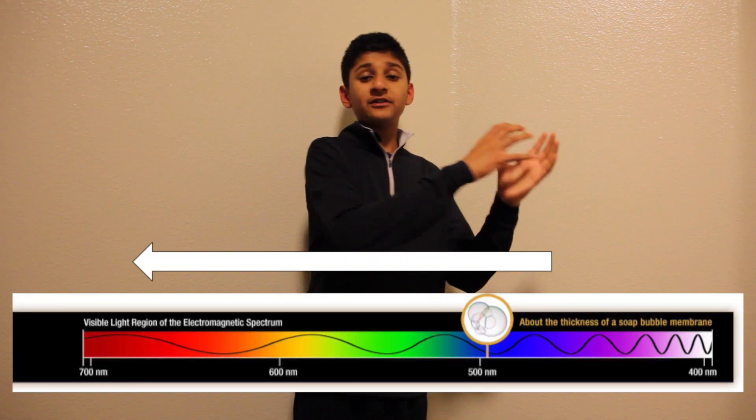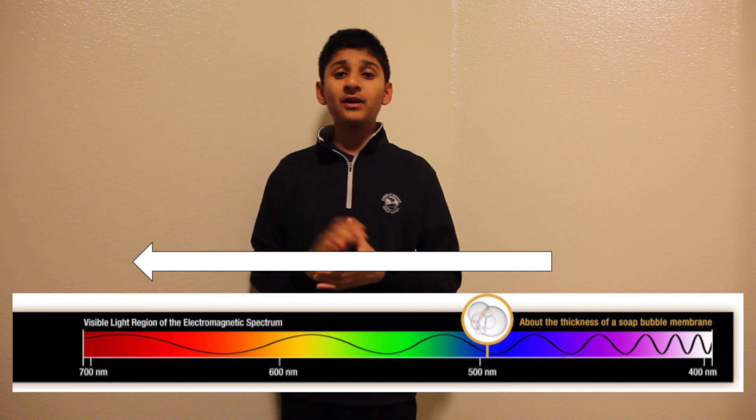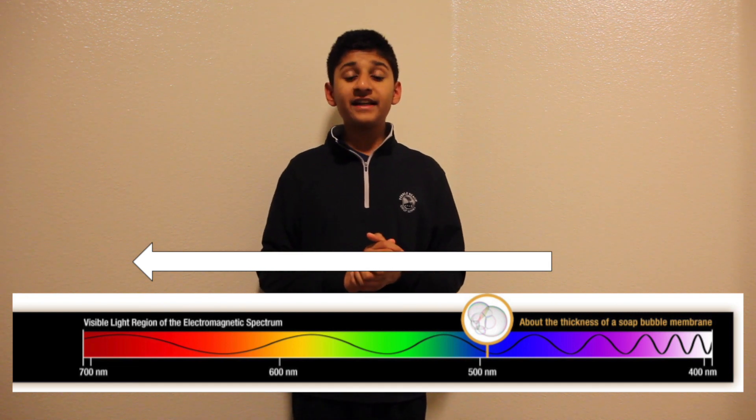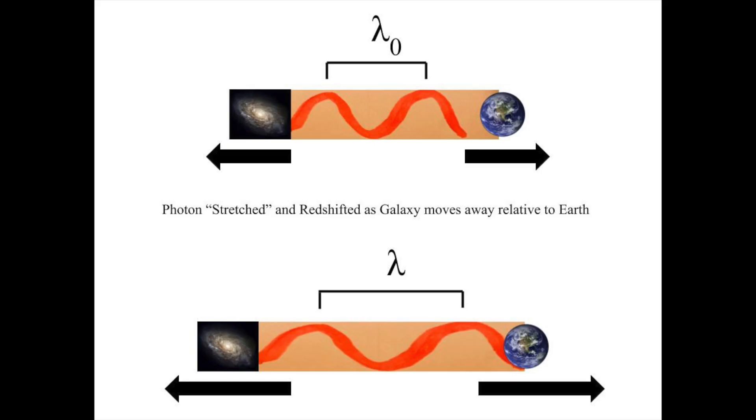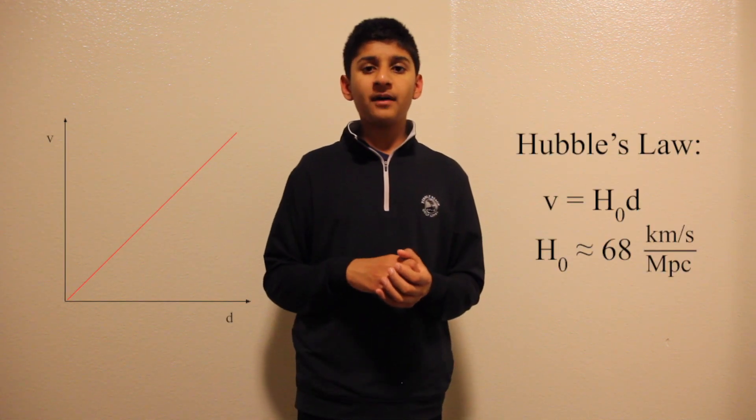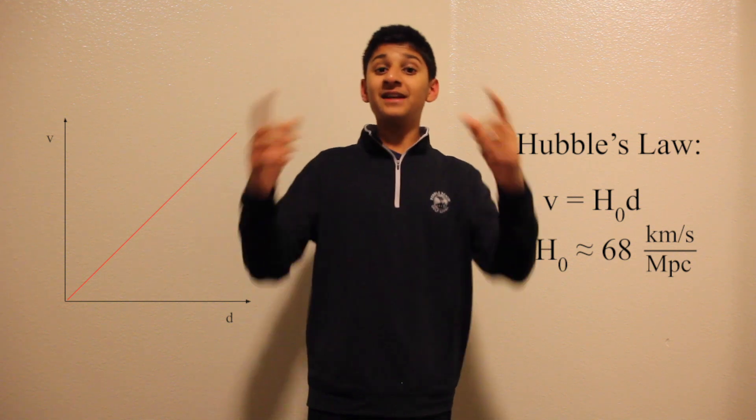Hubble observed a redshift, or Z, from these distant galaxies, meaning the light was being stretched as it traveled towards Earth. The redshift indicates that the galaxies were moving away from Earth. Hubble could use Z to calculate the recession velocities of these galaxies. Hubble noticed that the recession velocities of the distant galaxies were proportional to the distance they were from us. This is Hubble's Law.